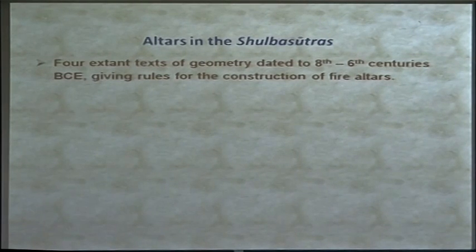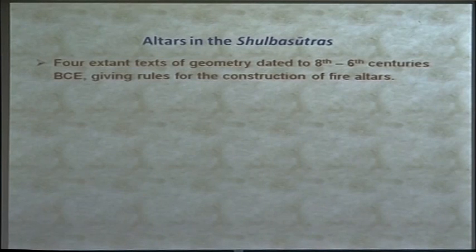In the first millennium BC we move to the Shulva Sutras — the first texts of geometry in India, dating roughly to the 8th–6th century BC. There are four major authors: Baudhayana, Apastamba, and two more. They give geometric rules for the construction of altars. The philosophy is explicit: the altar represents the whole universe, replicating the original sacrifice of Prajapati, the god whose body becomes the various parts of this universe.